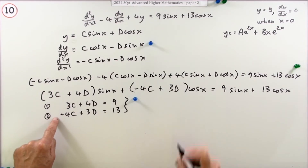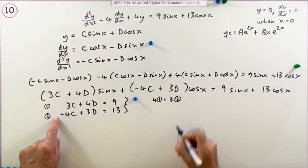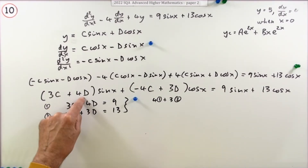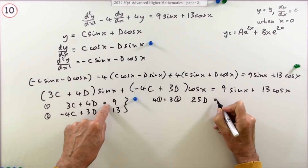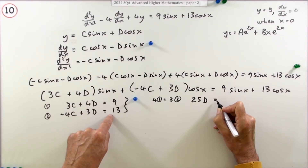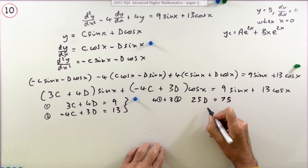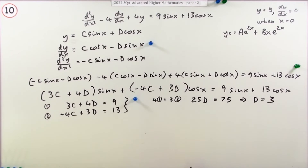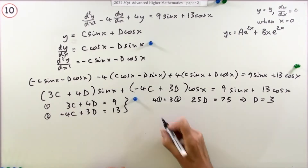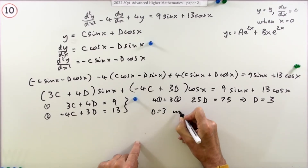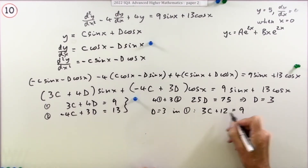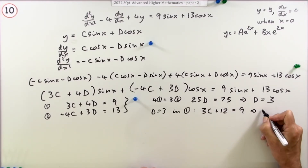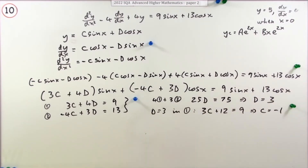Taking 4×(equation 1) + 3×(equation 2) eliminates c: the c terms give 12c − 12c = 0, and on the right you get 36 + 39 = 75, so 25d = 75, giving d = 3. Substituting back into equation 1: 3c + 12 = 9, so 3c = −3, giving c = −1. Getting those results gets a mark.